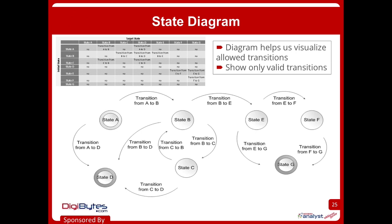I'm going to show you the templates for these side by side to show you that they actually show exactly the same information, just in two different ways. The state diagram only shows the valid transitions, so inherently it's showing the no's in the state table by simply not showing the arrow as a line. The difference in when I would use one versus the other: state tables when I want to make sure I'm considering every single state and every single state transition. The diagram is when I want to leave out all those non-transitions and just focus on the actual transitions, and it lets me visualize the sequence of transitions more easily.